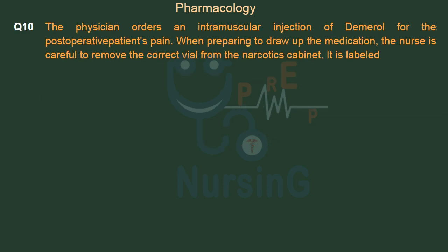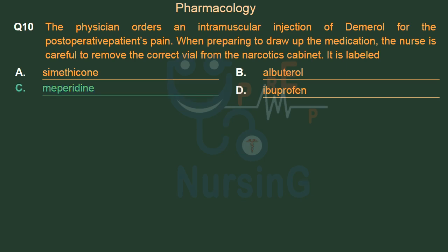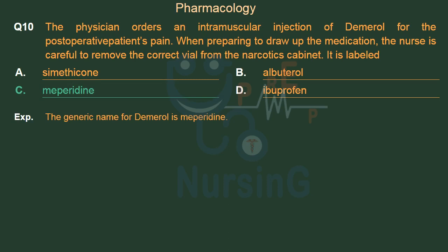The physician orders an intramuscular injection of Demerol for the post-operative patient's pain. When preparing to draw up the medication, the nurse is careful to remove the correct vial from the narcotics cabinet. It is labeled — Option A: Simethicone. Option B: Albuterol. Option C: Meperidine. Option D: Ibuprofen. The right answer is Option C, Meperidine. The generic name for Demerol is Meperidine.